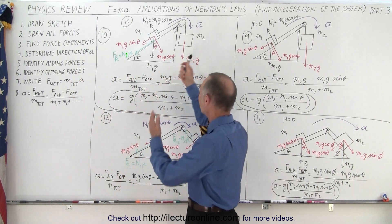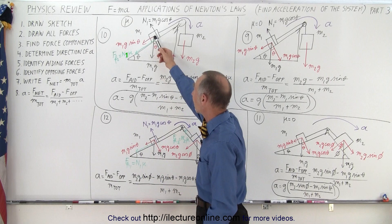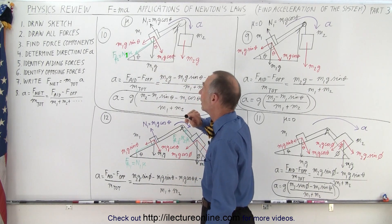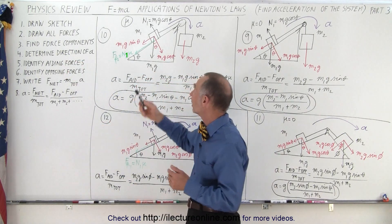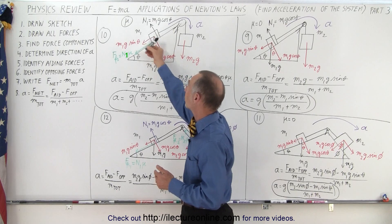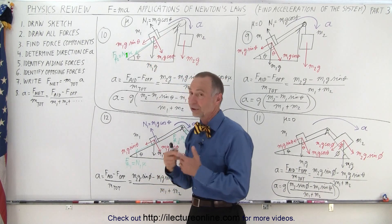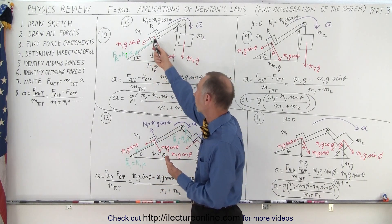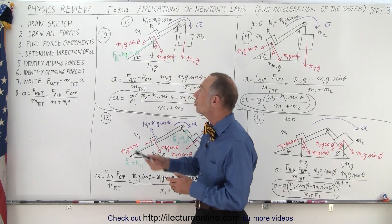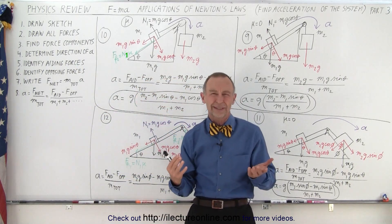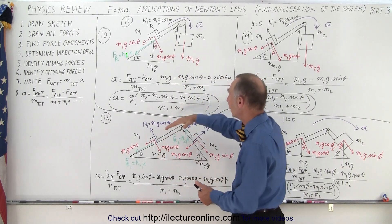First, you want to draw a sketch of the problem. Secondly, you want to draw all the forces — there's a force of gravity acting on each mass. Then you must take each of the forces and divide them into the components that are perpendicular and parallel to the incline. Any forces not already perpendicular or parallel, like the force due to gravity, you subdivide into its two components. Then you must determine the direction of the acceleration — in each case we assume it will be clockwise.